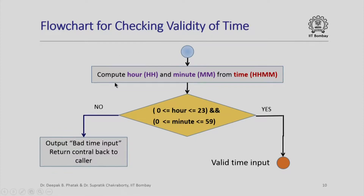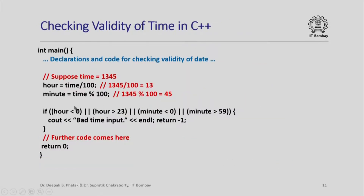To check the validity of time, similar to the date case, we compute the hour and minute parts separately from the time in hour-minute format. We check whether the hour lies between 0 and 23 and the minute between 0 and 59. In the program, we calculate hour as the quotient on dividing by 100 and minute as the remainder — so for example if time is 1345, hour is 13 and minute is 45. If hour is less than 0 or greater than 23, or minute is less than 0 or greater than 59, we output bad time input and return minus 1.